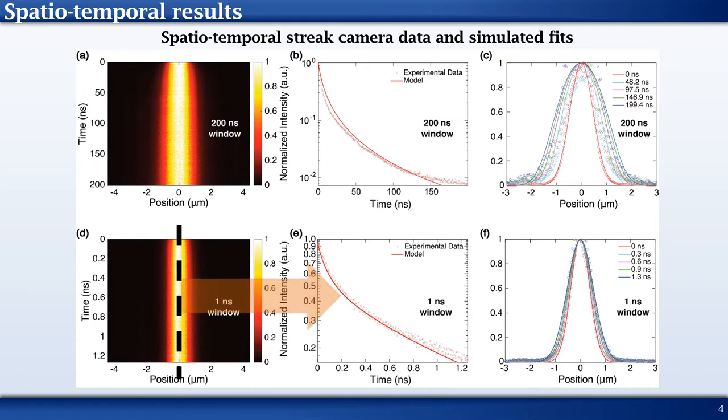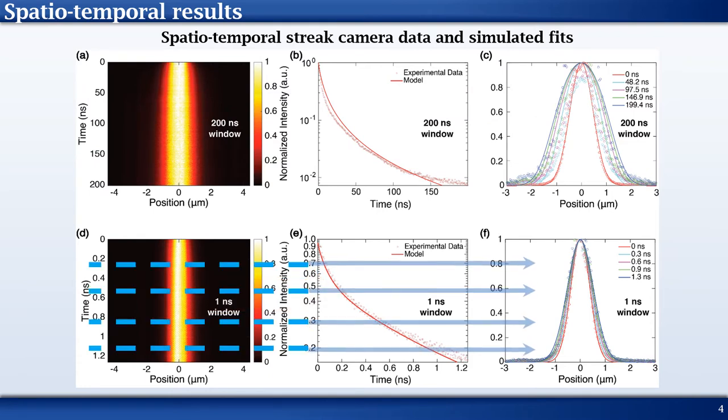Similarly, sectional views are also shown for the 1 nanosecond measurement. We note the spreading is significantly different in both time windows. Although the 200 nanosecond measurement appears to have a larger spreading area, the widening within the 1 nanosecond window occurs at a faster rate.